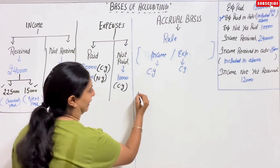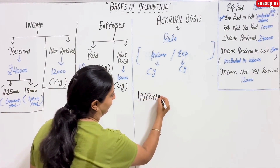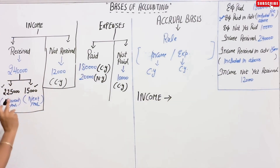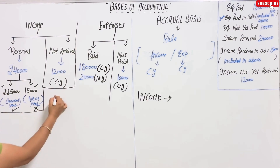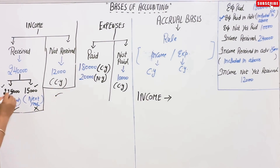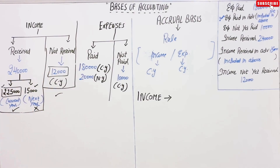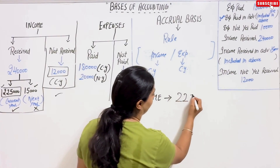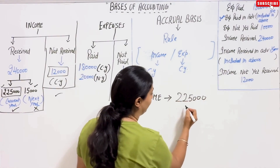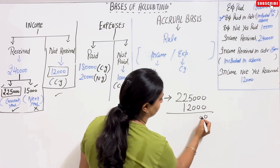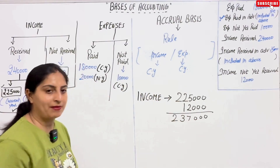For accrual basis, first we take income where current year is written. The next year amount, we do not take. So current year income: two lakh twenty-five thousand from received column and twelve thousand from not-received column — both are current year. Total income is two lakh twenty-five thousand plus twelve thousand.